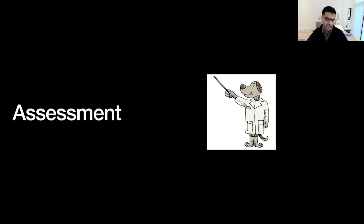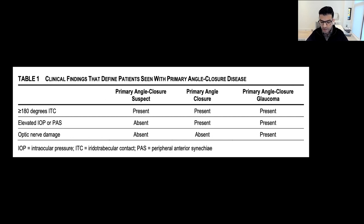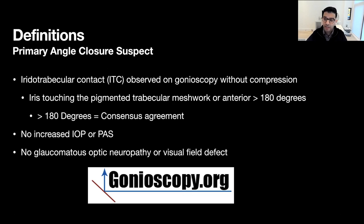With that background, let's move on to the assessment of primary angle closure disease. Our first step in any assessment is to determine the stage of the glaucoma. Angle closure disease is pretty much always subdivided into three constituent diagnoses. Level one: primary angle closure suspect (PACS). These patients have iridotrabecular contact observed on gonioscopy without compression, where contact is described as the iris touching the pigmented trabecular meshwork or any structure anterior to it for at least 180 degrees.